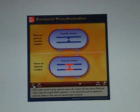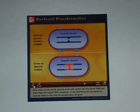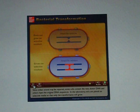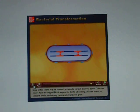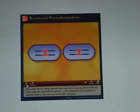Since either strand may be repaired, some cells contain the new donor DNA and others have the original DNA sequences. In the laboratory, cells are plated on selective media so that only the transformants will grow.